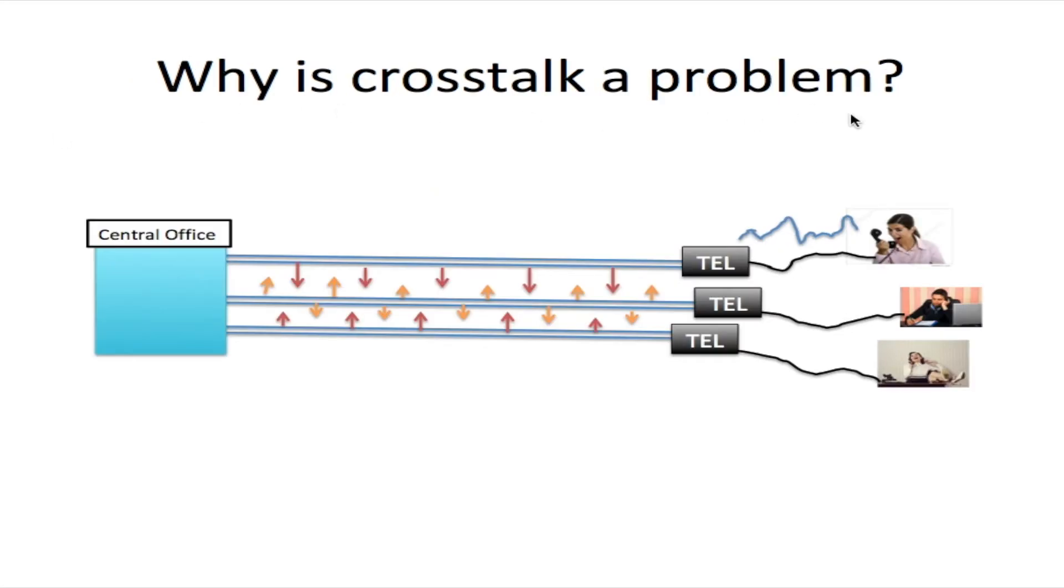Why is crosstalk a problem? Well, crosstalk is not a problem if there's only one line working on its own. But when there are more than one line within a cable, for instance, a cable usually has as many as 25 pairs of wires and each pair is one line, we get crosstalk when lines are in close proximity.